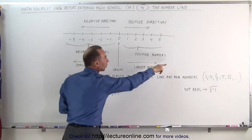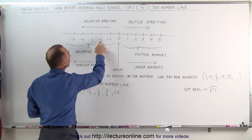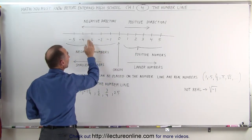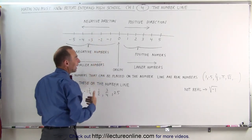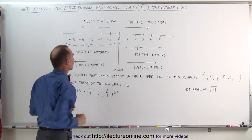Numbers to the right are larger than numbers to the left. For example, negative 2 is larger than negative 3 because it's to the right of negative 3 and that's how we can tell the difference between smaller numbers and larger numbers once they're on the number line.